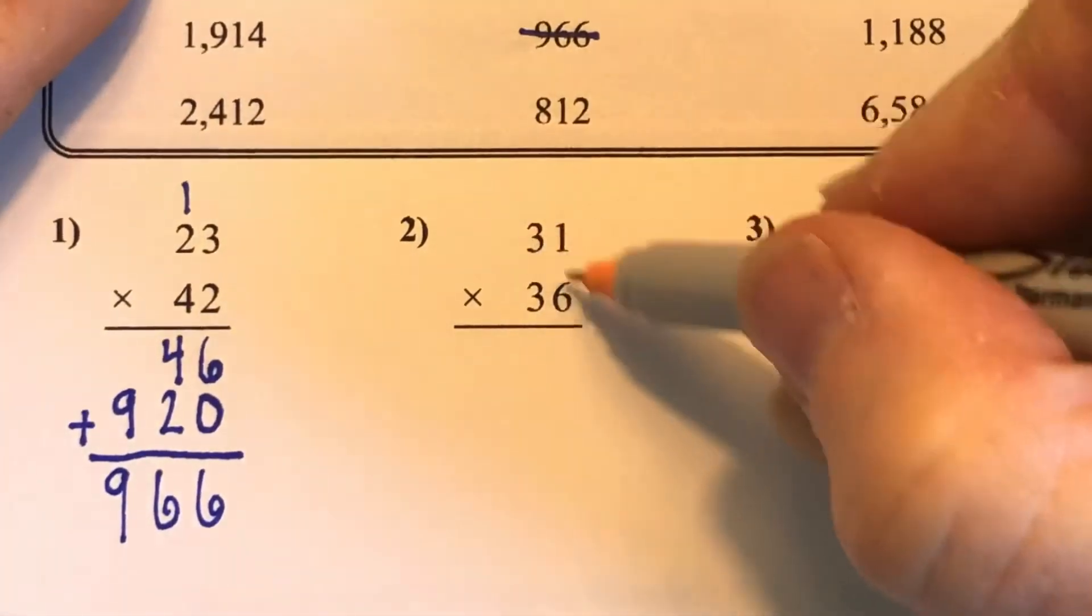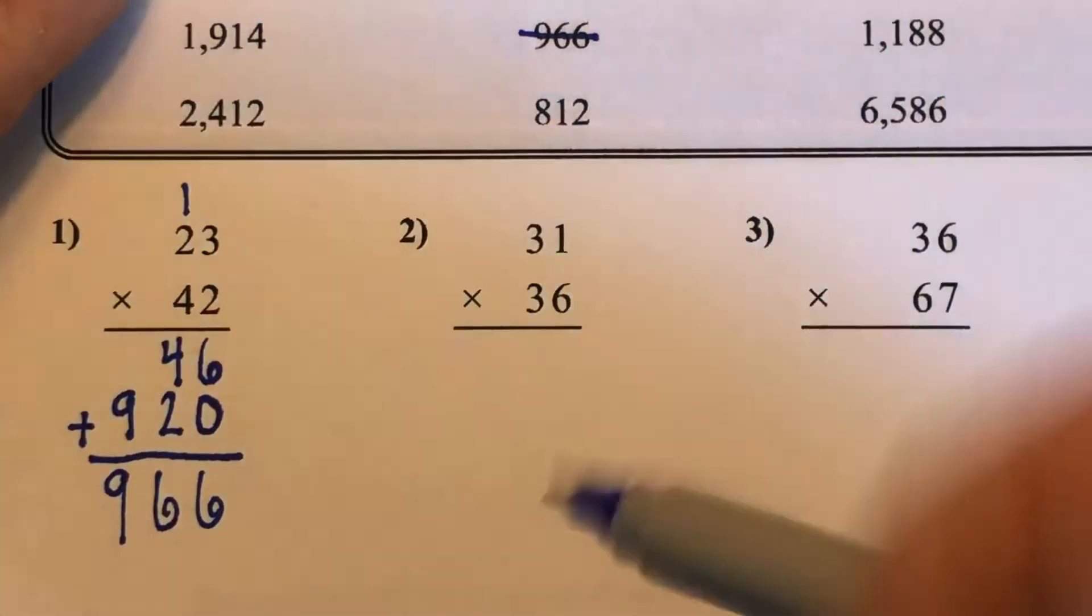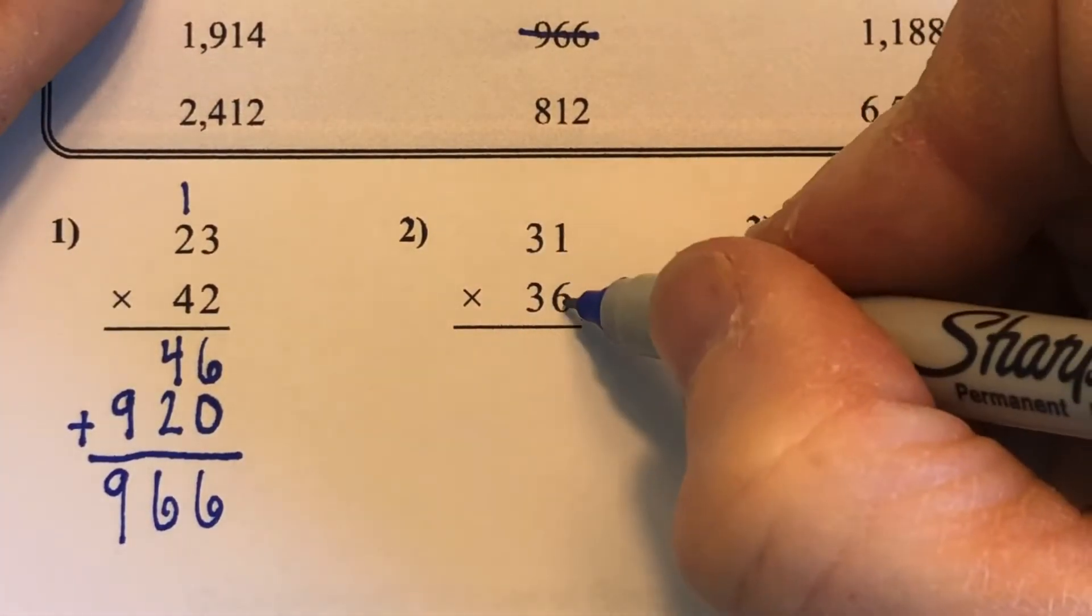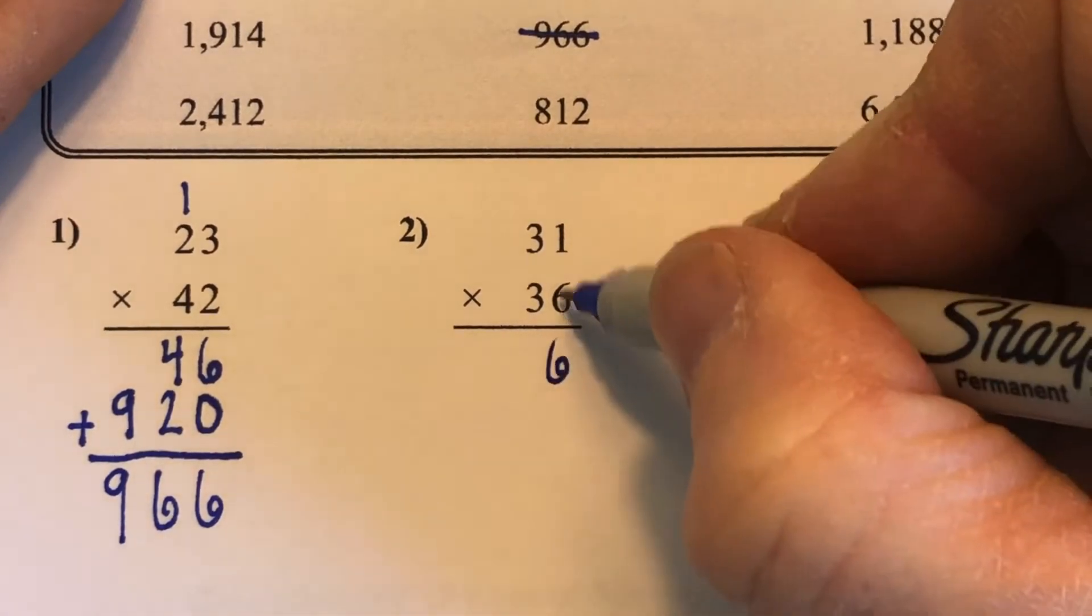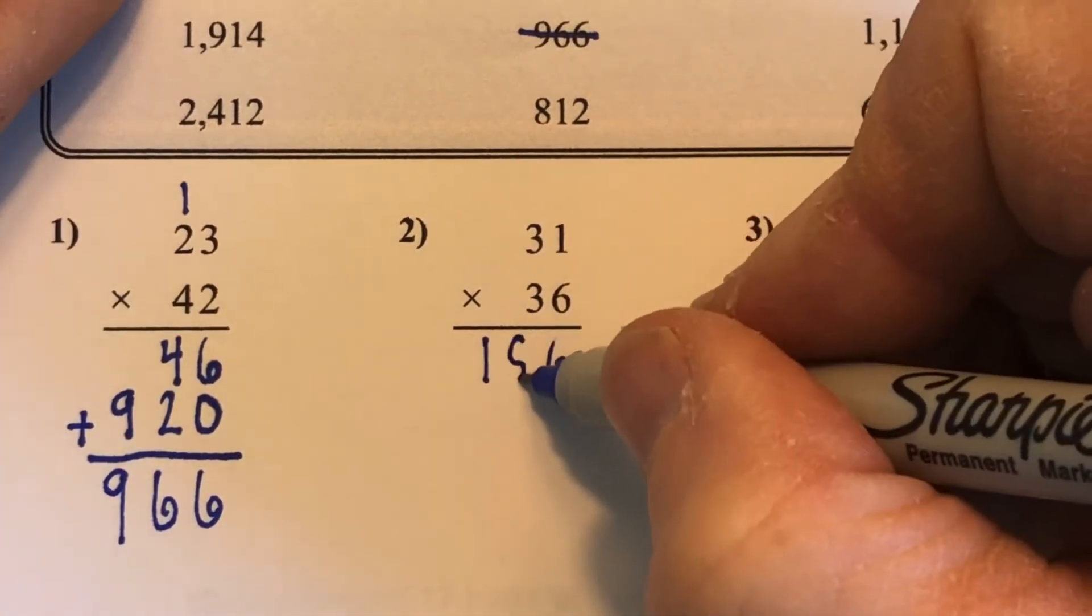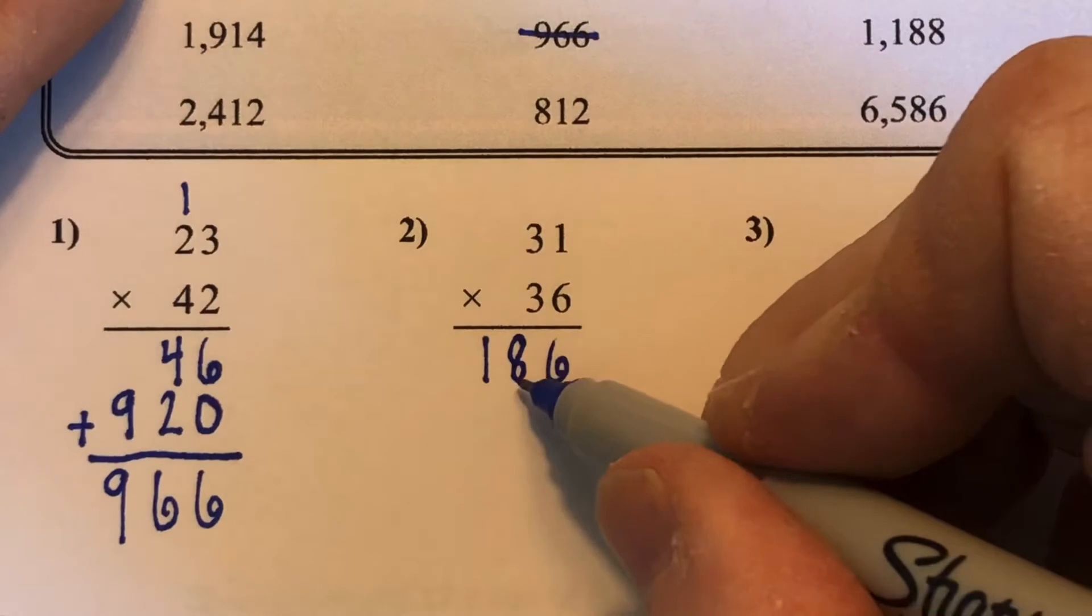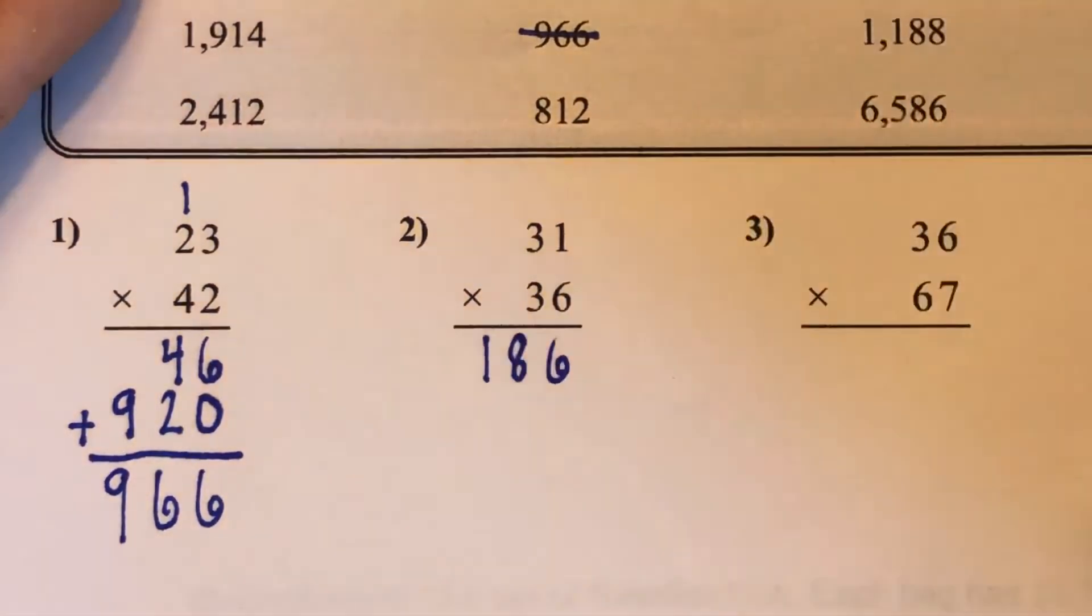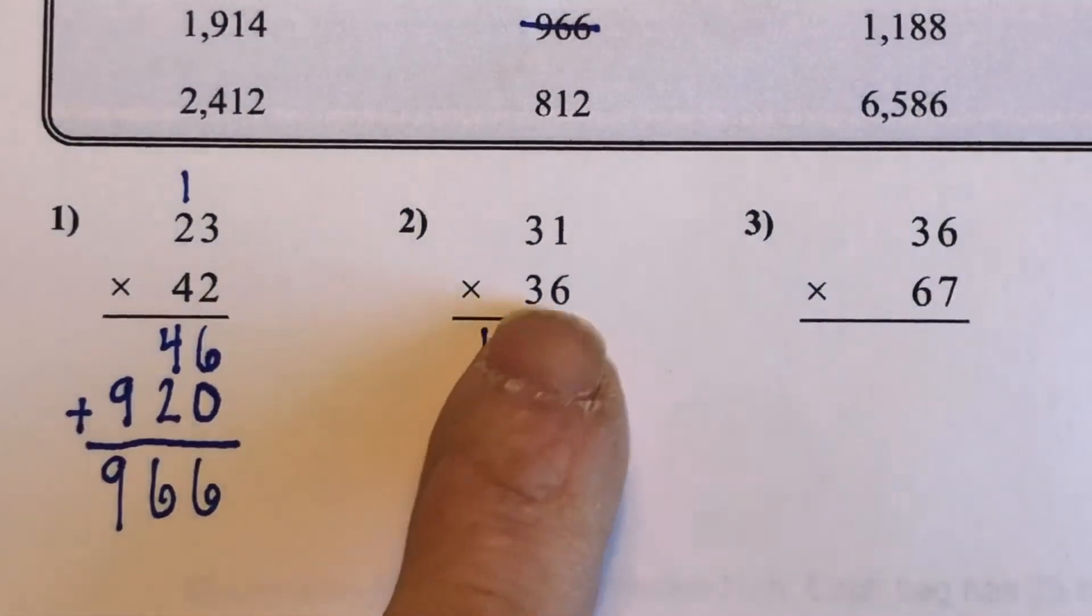We start here in the ones place right here. So this 6 needs to be multiplied by that 1 and that 3. 6 times 1 is 6. 6 times 3 is 18. Now I put that whole 18. I don't carry the 1 because there are no hundreds place here. So that's the end of my problem for the ones place.